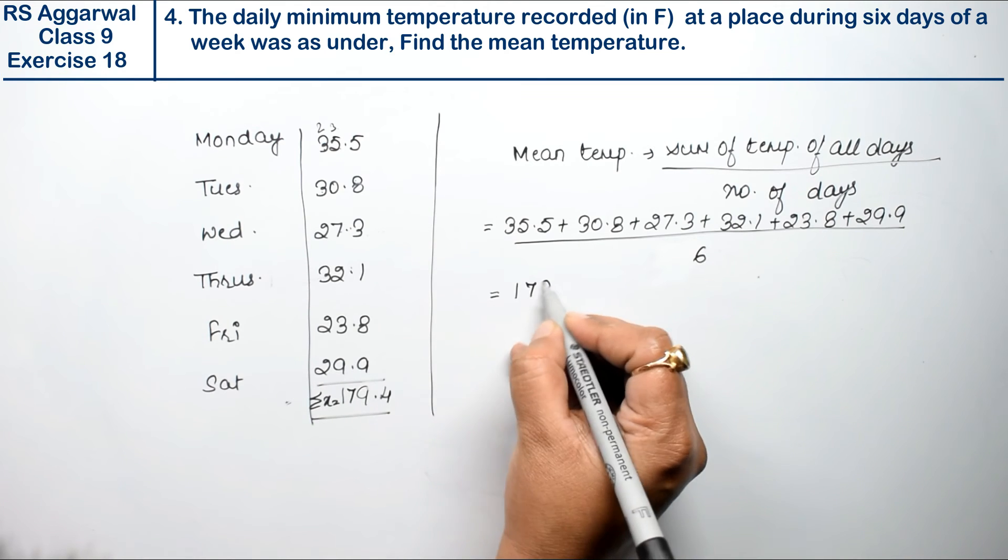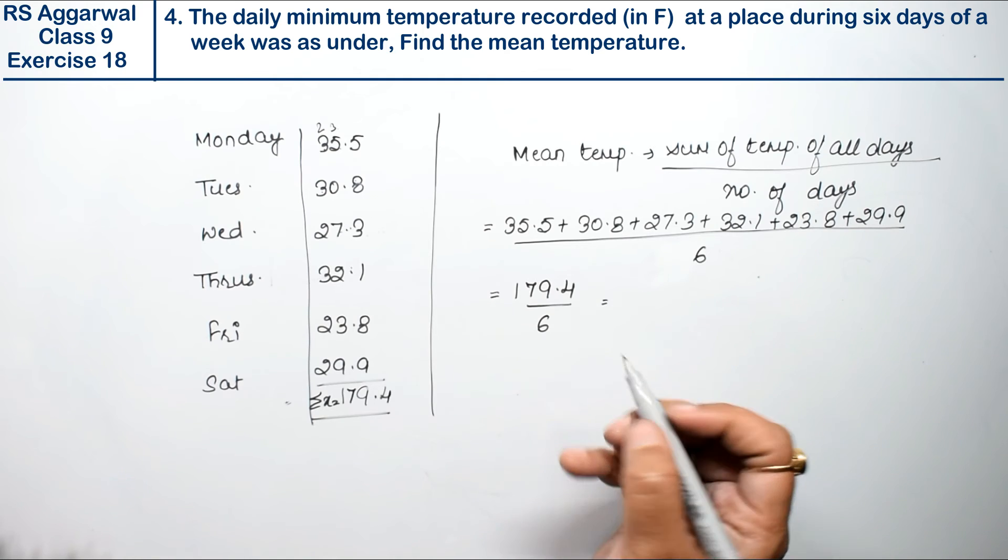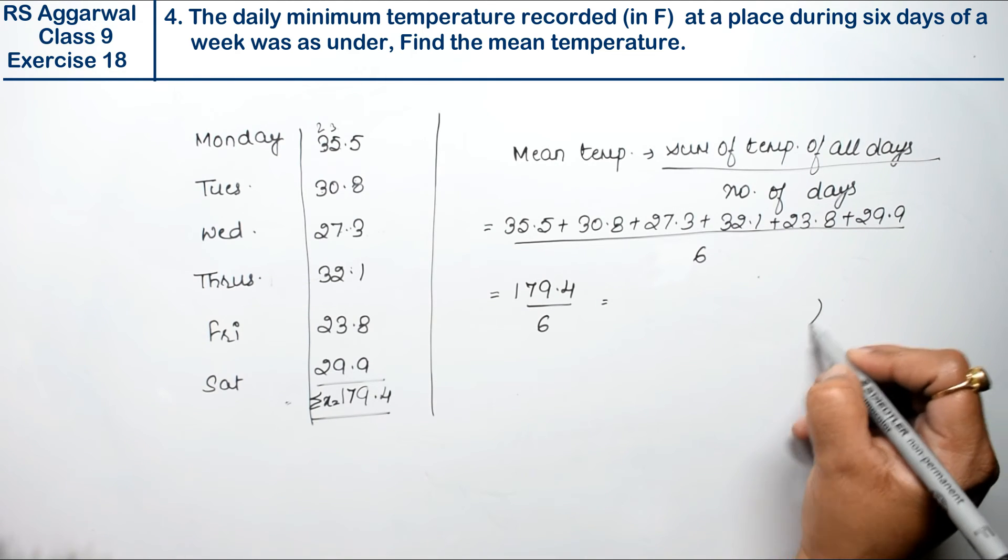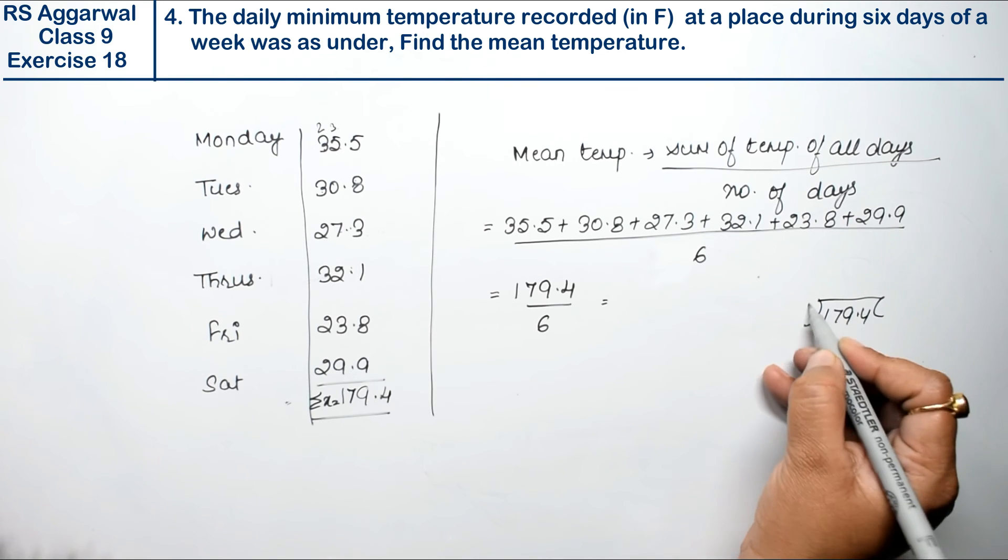One seven nine point four divided by six. Toh ab isko divide kardingay six se, dikhiye. One seven nine point four ko six se divide ya.